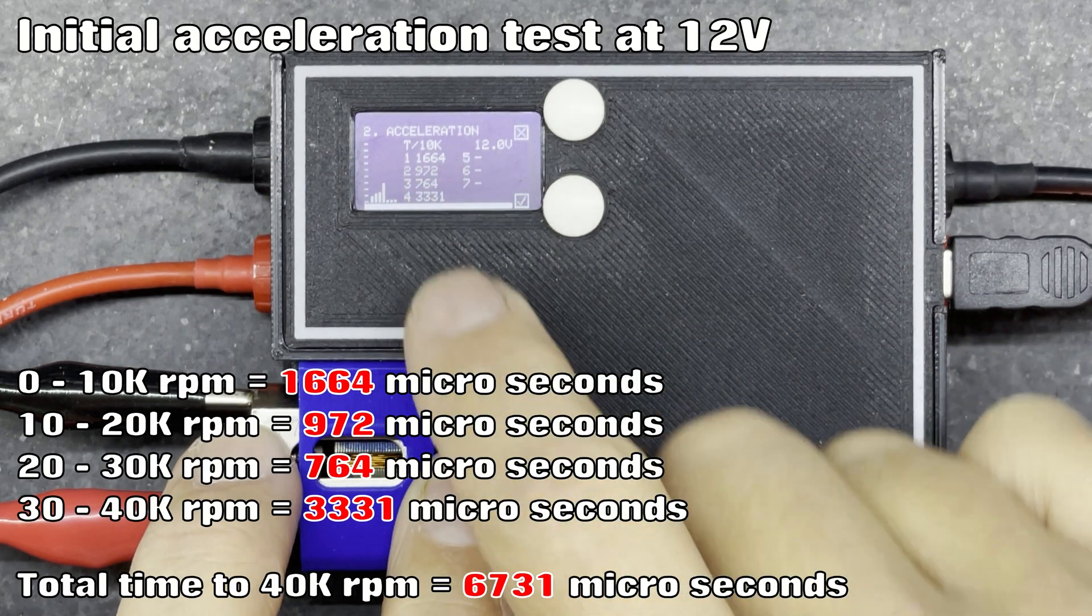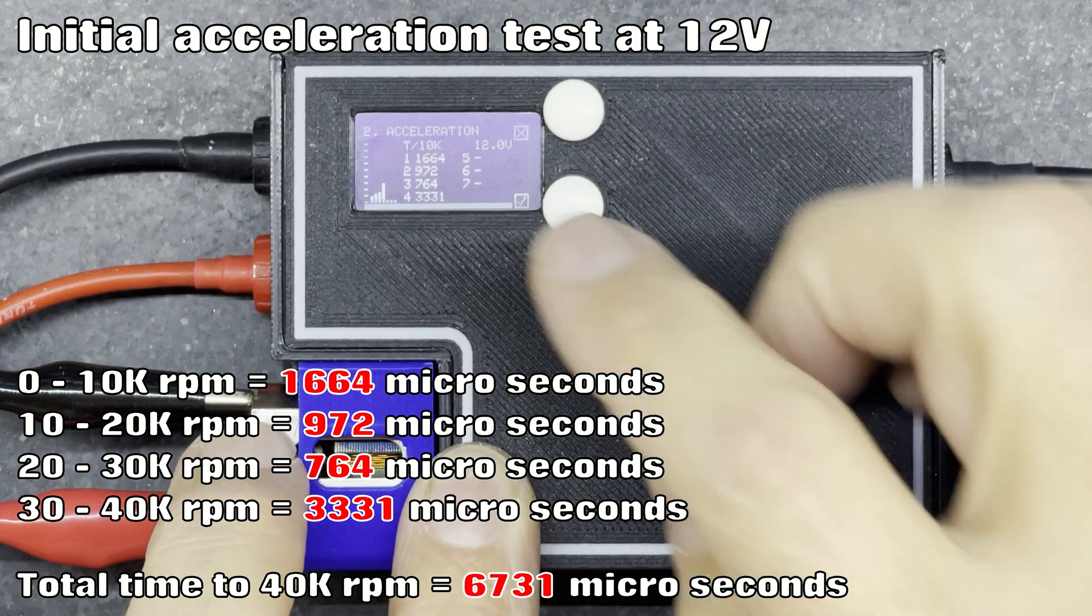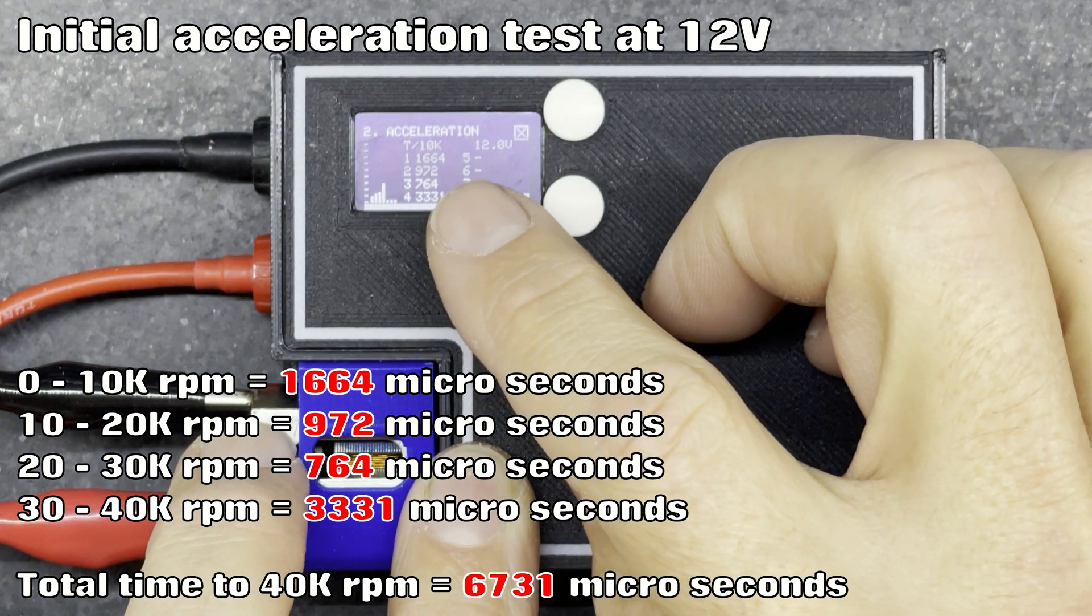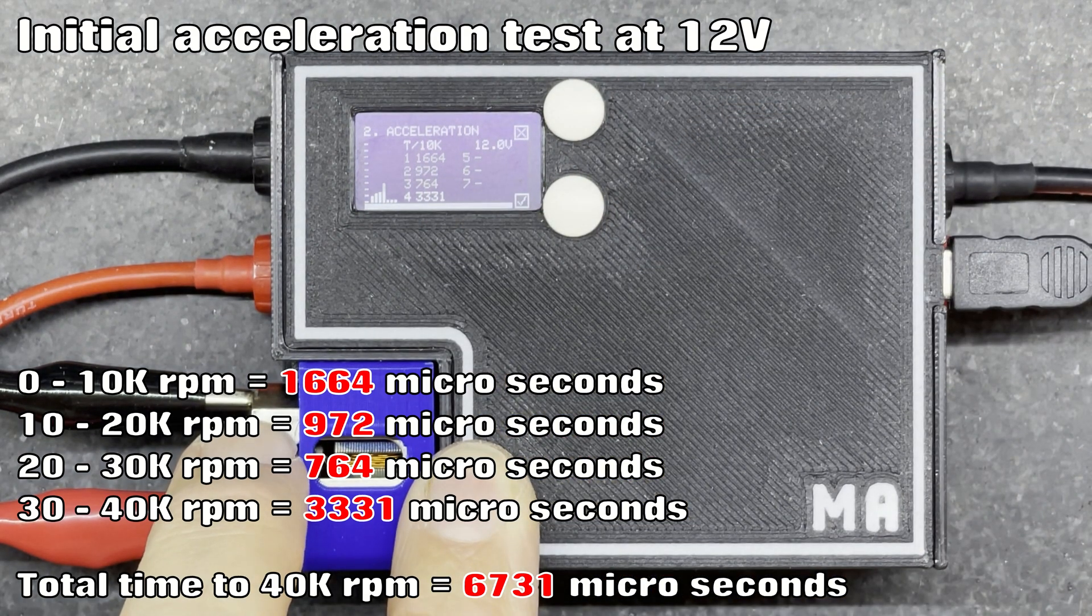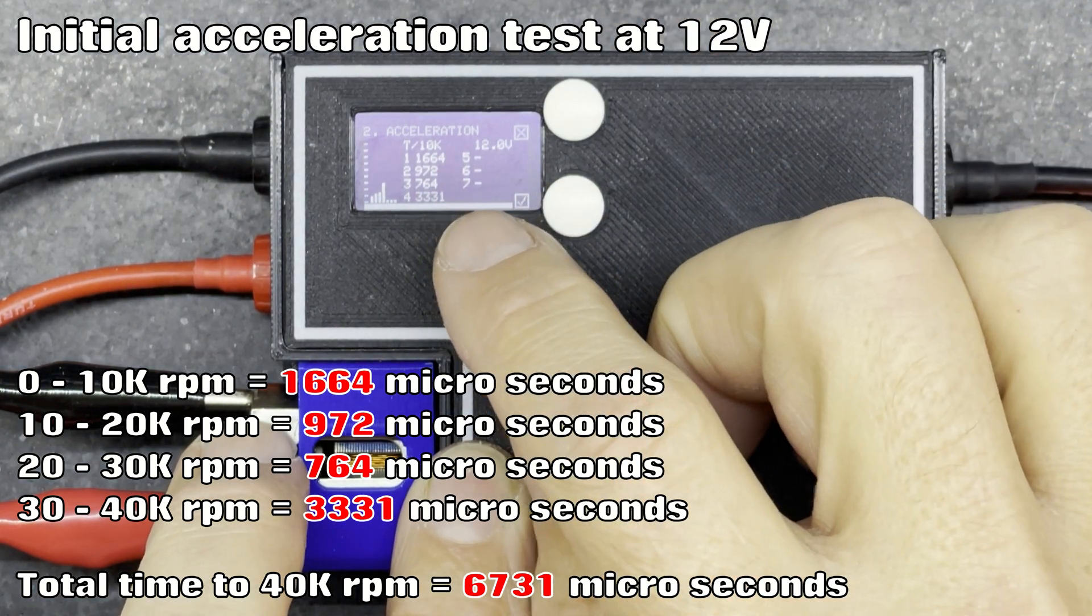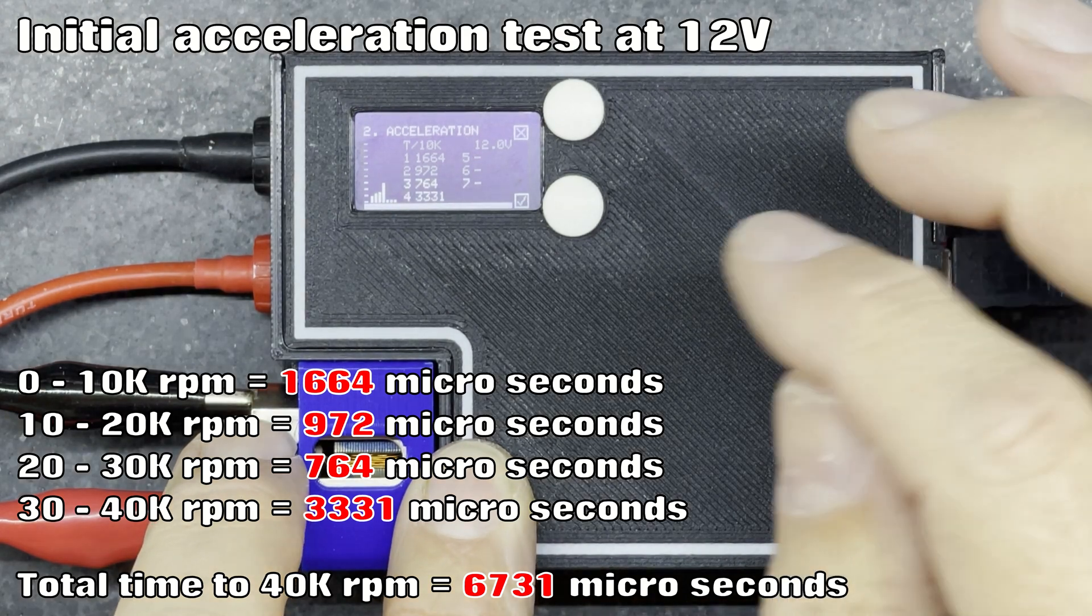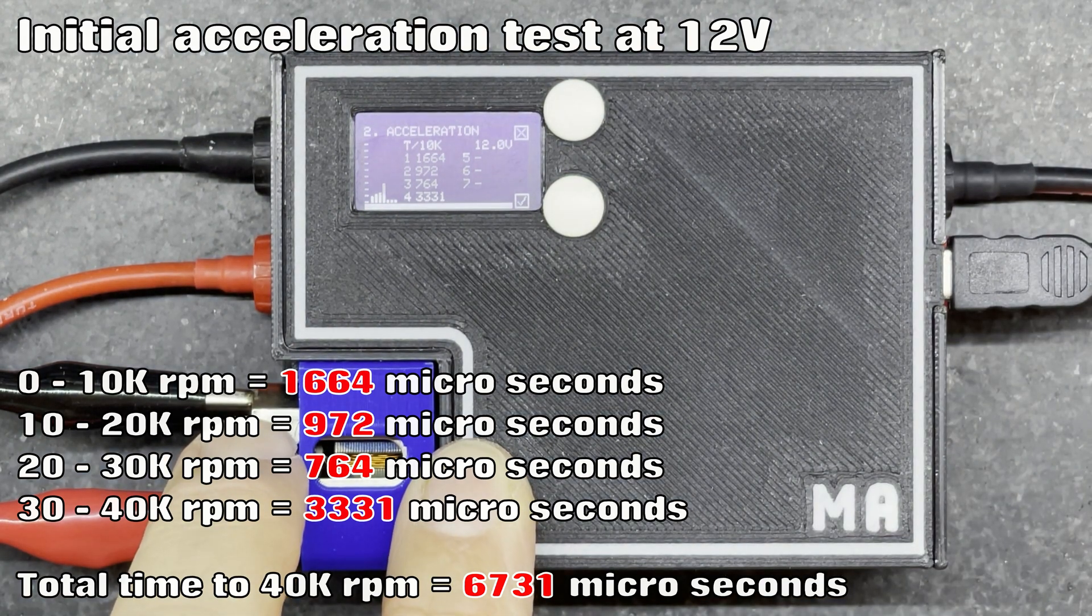Okay, so these numbers on the screen here tell me in microseconds how fast it accelerated to 10,000, 20,000, 30,000, 40,000 RPM. They're actually the gaps in between, so 1664 microseconds to 10,000, then a further 972 to 20,000, etc.